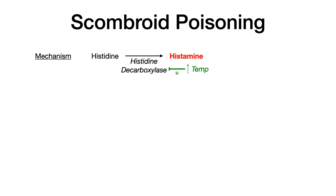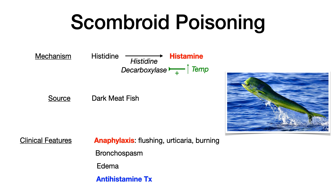When you eat something with lots of histamine, you get clinical features that resemble anaphylaxis: flushing, urticaria, burning, erythema. This can progress to bronchospasm and edema. Because this is due to too much histamine, the treatment is an antihistamine. You can also use bronchodilators and epinephrine — you basically treat scombroid poisoning just like any other anaphylaxis. The source is dark meat fish.